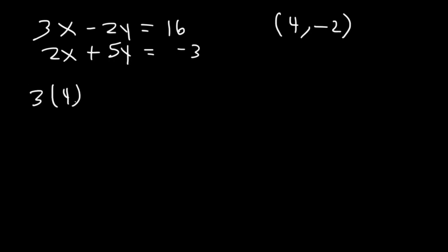So let's plug in 4 and negative 2 into the first equation. 3 times 4 is 12. Negative 2 times negative 2 is positive 4. And 12 plus 4 is 16. So the ordered pair works for the first equation.